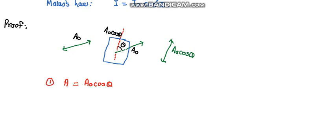We have already seen in waves that intensity is directly proportional to amplitude square. So amplitude square equals amplitude naught square cos square theta, which could further be written as intensity equals intensity naught cos square theta, which is our Malus's law.